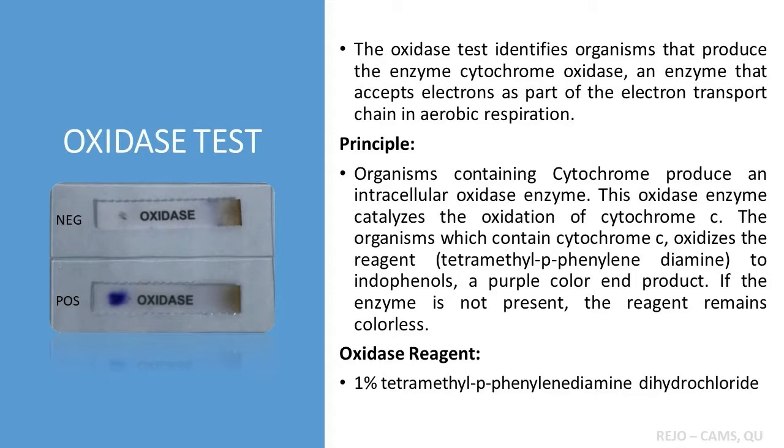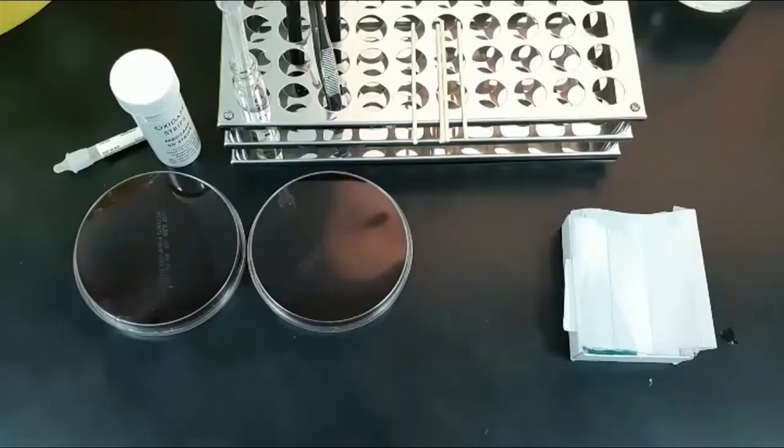The principle of the oxidase test: organisms containing cytochrome produce an intracellular oxidase enzyme. This oxidase enzyme catalyzes the oxidation of cytochrome c. Organisms which contain cytochrome c oxidize the reagent to indophenol, a purple-colored end product. If the enzyme is not present, the reagent remains colorless. The oxidase reagent is 1% tetramethyl-p-phenylenediamine dihydrochloride.